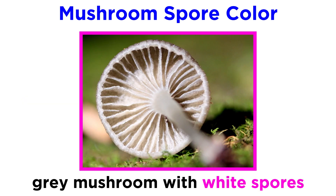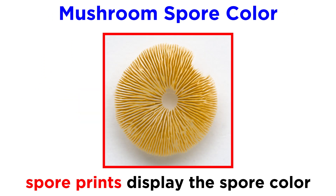Spore color is also a useful tool that does not require microscopy. In order to see the spore color, mycologists will make a spore print by placing a fungus with its hymenium on a surface such as printer paper, aluminum foil, or wax paper. After a few hours, the spores from the mushroom will fall onto the paper and produce a spore print, displaying the spore color.